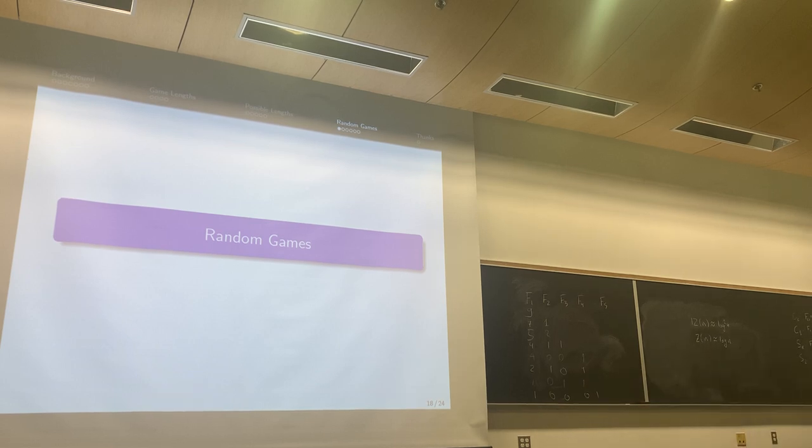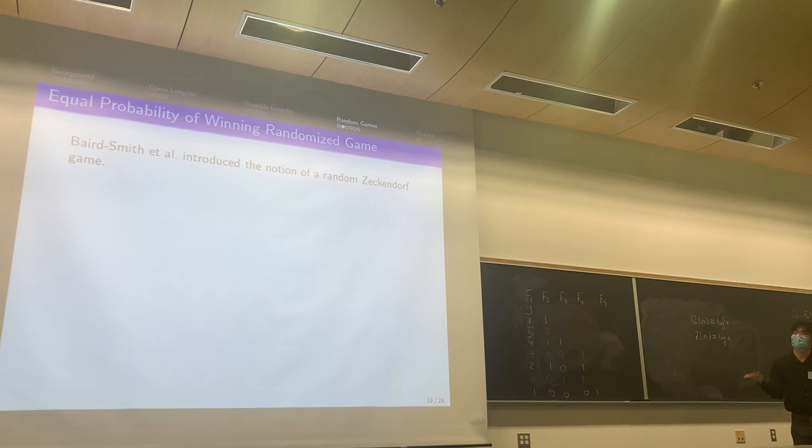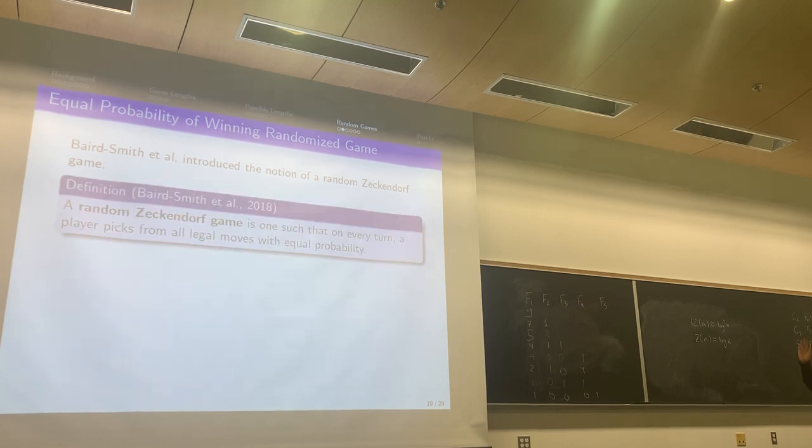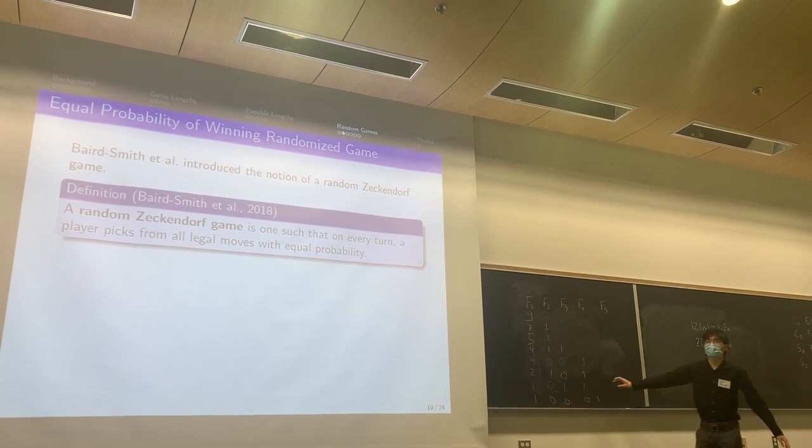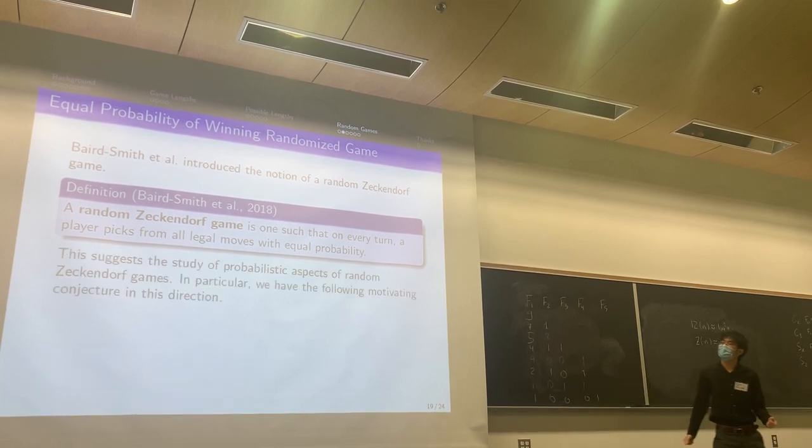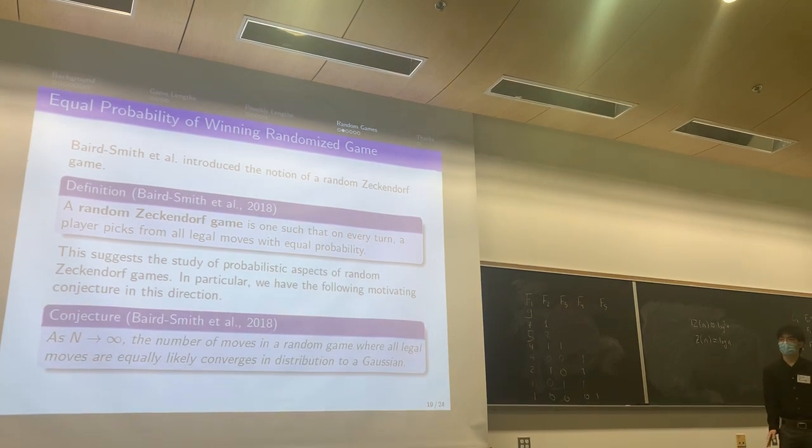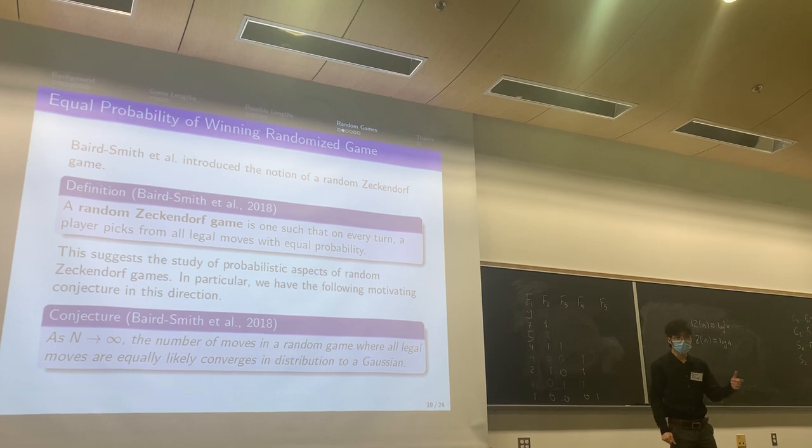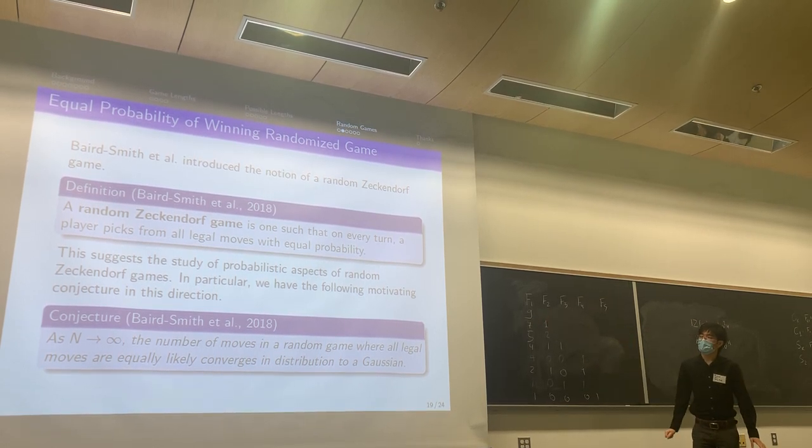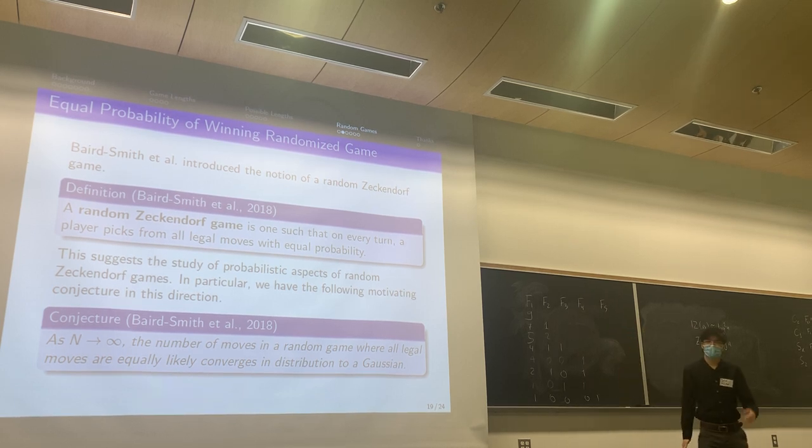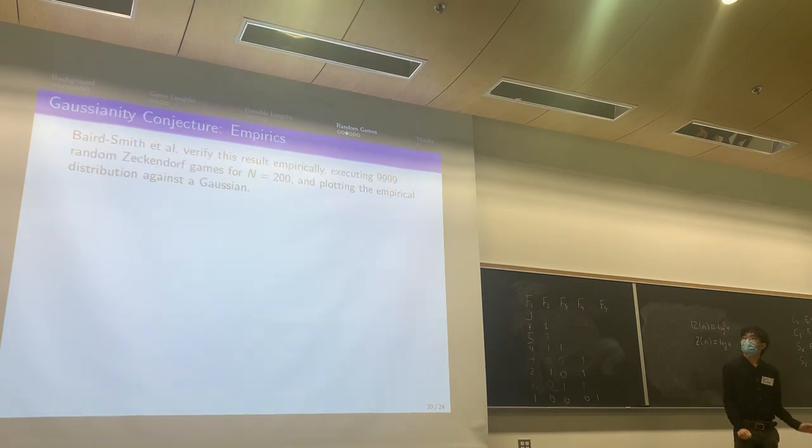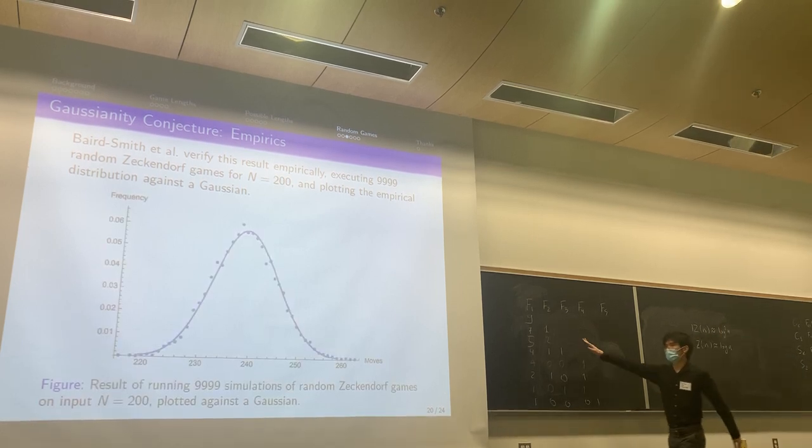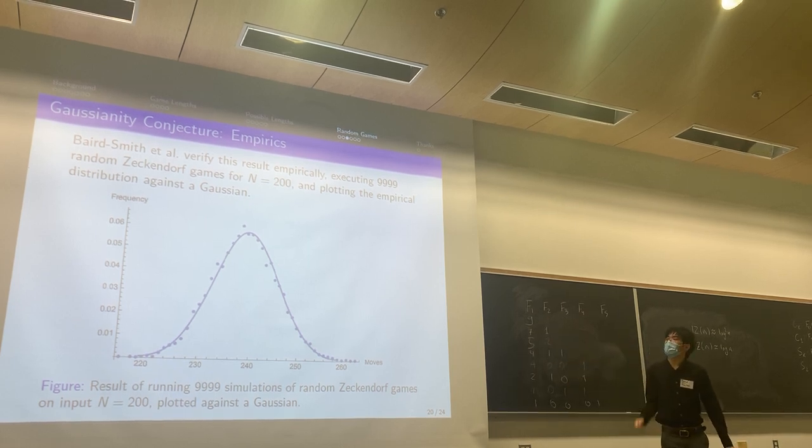Now we're going to talk about what random games are and how do we define it. This notion of random game is from a prior paper. The definition is that if you are given a game state, it is choosing to move randomly, as if you have no strategy at all. This is like a probabilistic notion of the Zeckendorf game, and how we can get game lengths from such a random game. The conjecture that they found is that as n goes to infinity, or starting number tokens going to infinity, the games that are defined as this kind of random game would converge to a Gaussian distribution in length. Why did they make this conjecture? Well, they executed 9999 random Zeckendorf games when n equals 200, and that's the graph that they get, and it fits pretty well with the Gaussian distribution.